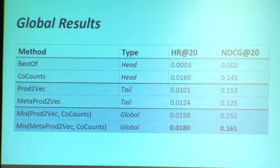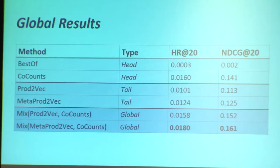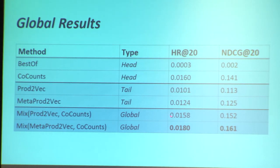In terms of global results, we divide the methods into three classes by expected performance. Popularity and co-counts (neighborhood method, standard CF) should work on popular items — the head of the distribution. Embedding methods should work better on the tail. In the mix we want to work on the whole distribution. We see Best-of doing the worst, which is normal. Co-counts is quite competitive and actually beats the embedding models by itself. But Meta-Prod2Vec adds a lot more value to the co-count method than Prod2Vec and becomes the best model in both NDCG and hit rate.